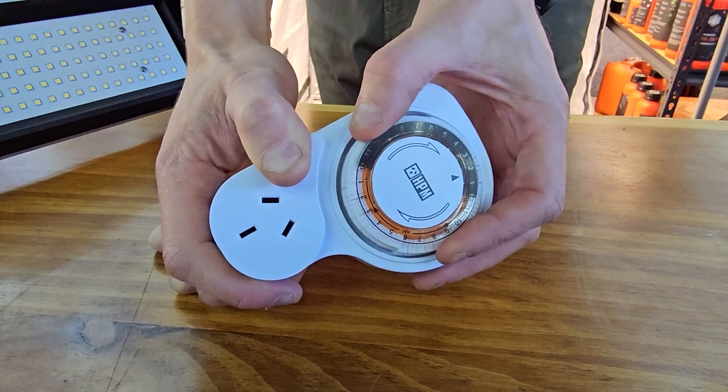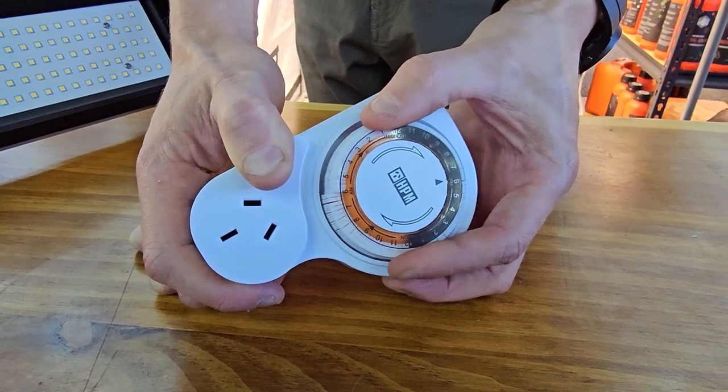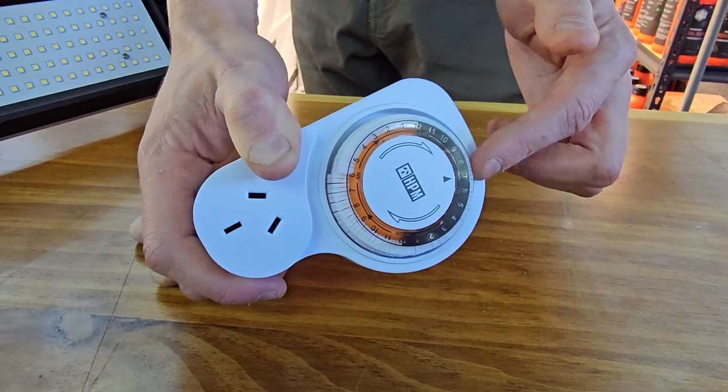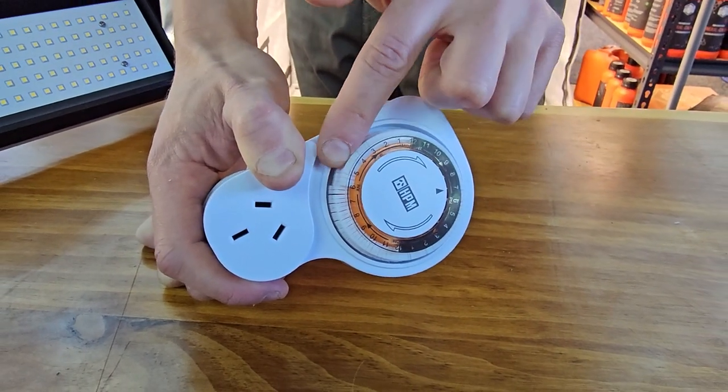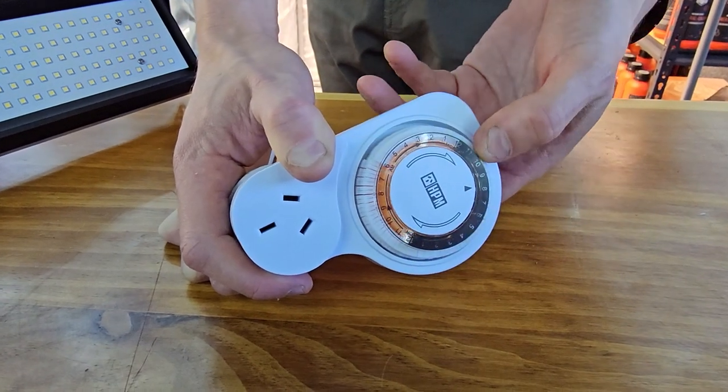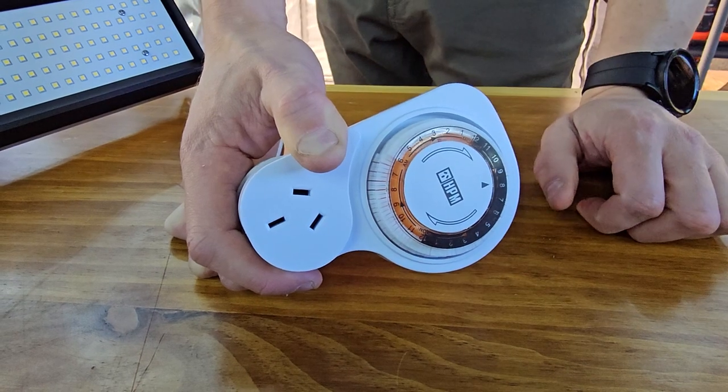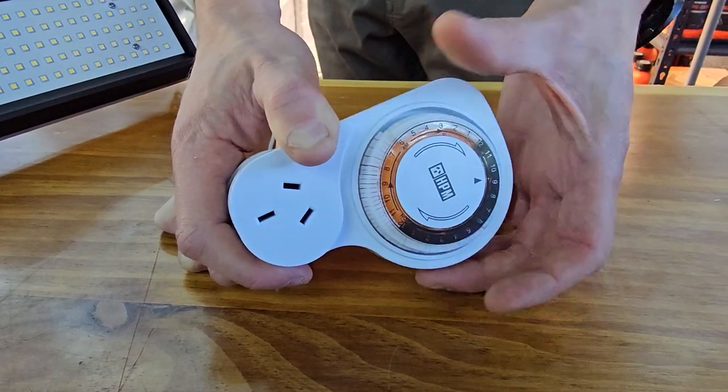So as the time of the day rotates, the equipment is on. And as we go past 6pm, there will be a click and the equipment will be off while these pins are up. So if halfway through the day, I just want the timer or whatever equipment to run for a few segments, you can easily just push those pins in and have the equipment turn on as soon as the arrow gets to it.